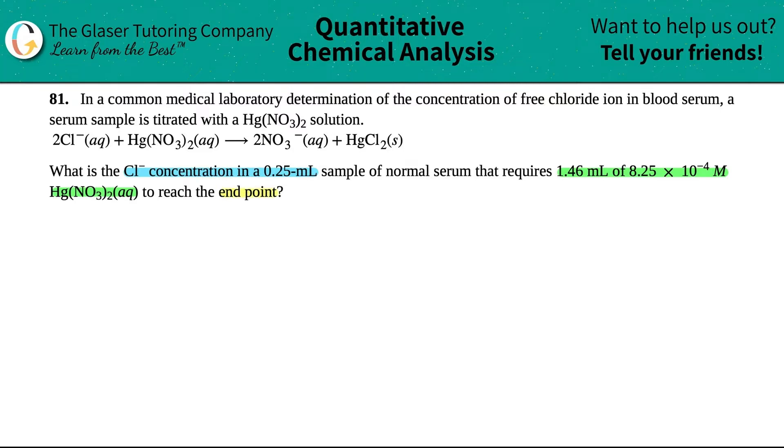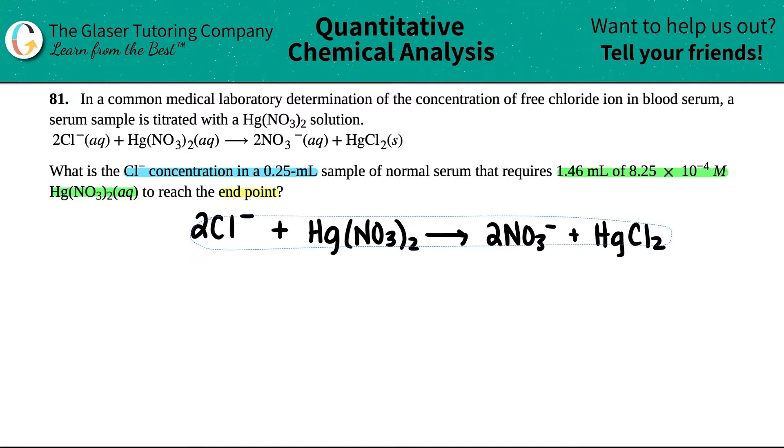So I have salts here - a chloride ion and this mercury nitrate. I'm going to rewrite the balanced equation so I could use it a little bit bigger. When these come together, you get two nitrate ions and that HgCl₂ compound. Let's place this in the middle.